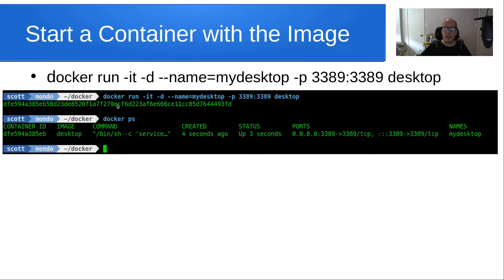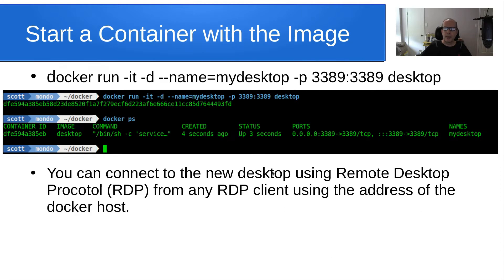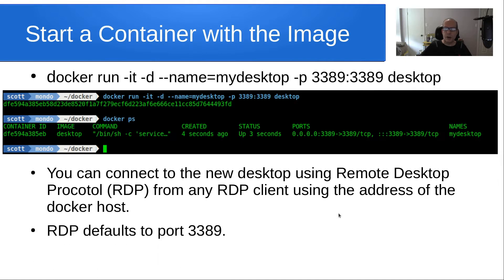And that's what I've done here. If you do a docker ps command, you can see that the image is running. You can connect to the new desktop using Remote Desktop Protocol (RDP) from any RDP client using the address of the Docker host. RDP defaults to port 3389 that we exposed to the network.